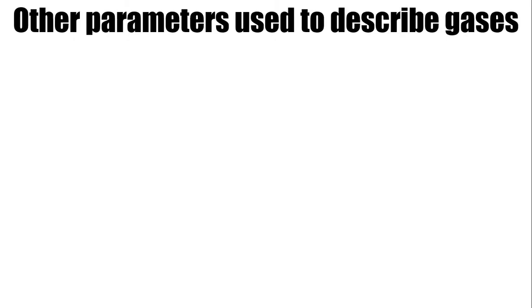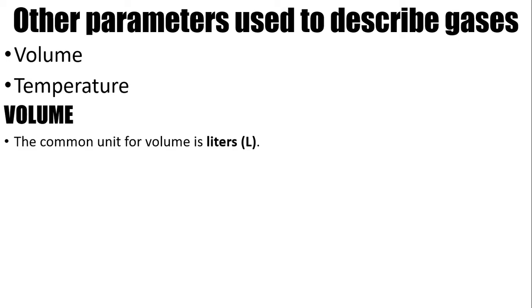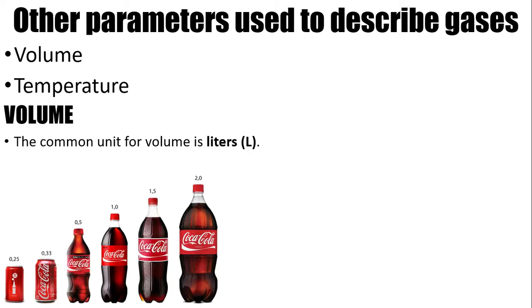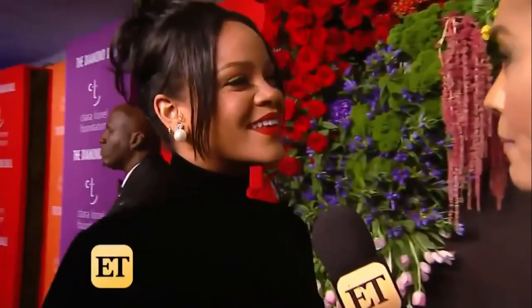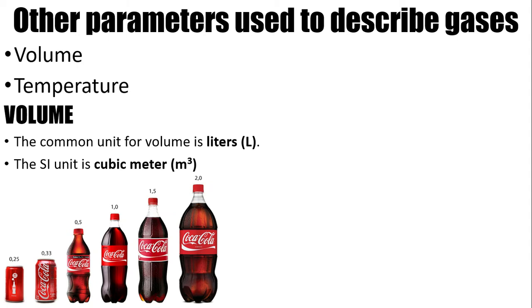Aside from pressure, there are other parameters used to describe gases. One of them is volume, and the other is temperature. Let's talk about volume first. The common unit for volume is liters. You can see them in Coke, in soda. You have 0.25 liters, 0.33, 2.0 liters of Coke. Not the Coke, you know what I mean, it's Coca-Cola.